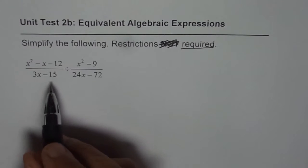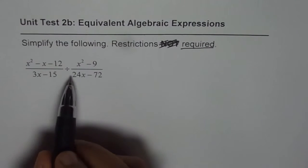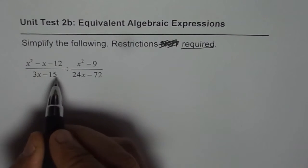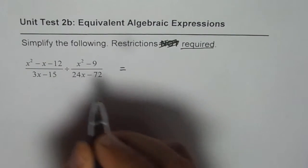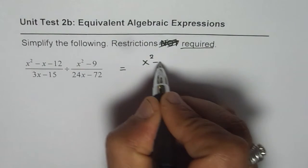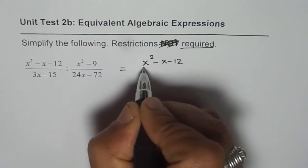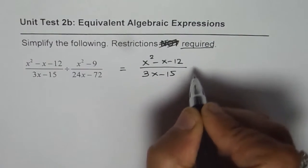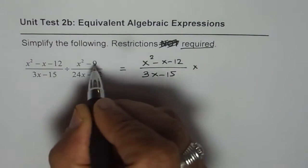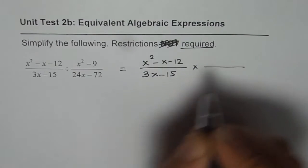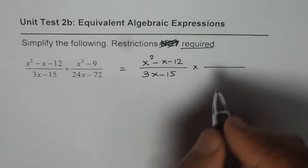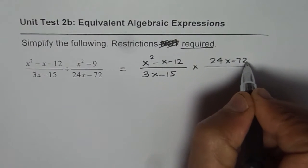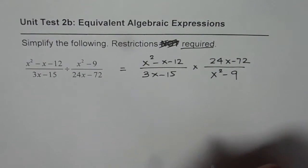Now, in this case, we should first factor and rewrite this expression as a multiplication statement. So, let me rewrite this as a multiplication statement. Then, it would be x squared minus x minus 12 divided by 3x minus 15 times, now x squared minus 9 goes to the denominator and 24x minus 72 comes to the numerator over x squared minus 9.